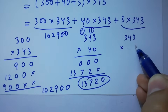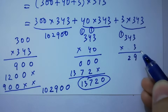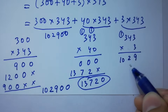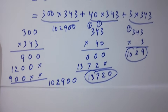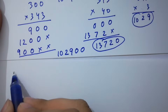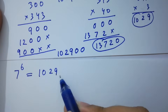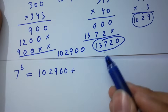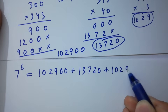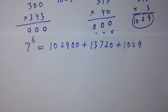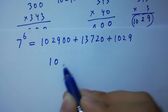Next, 343 times 3. 3 times 3 is 9, 3 times 4 is 12, 2 here 1 carry, 3 times 3 is 9, plus 1 is 10. So 3 times 343 equals 1,029. So 7 to the power 6 equals 102,900 plus 13,720 plus 1,029. Adding them gives 7 to the power 6 equal to 117,649.